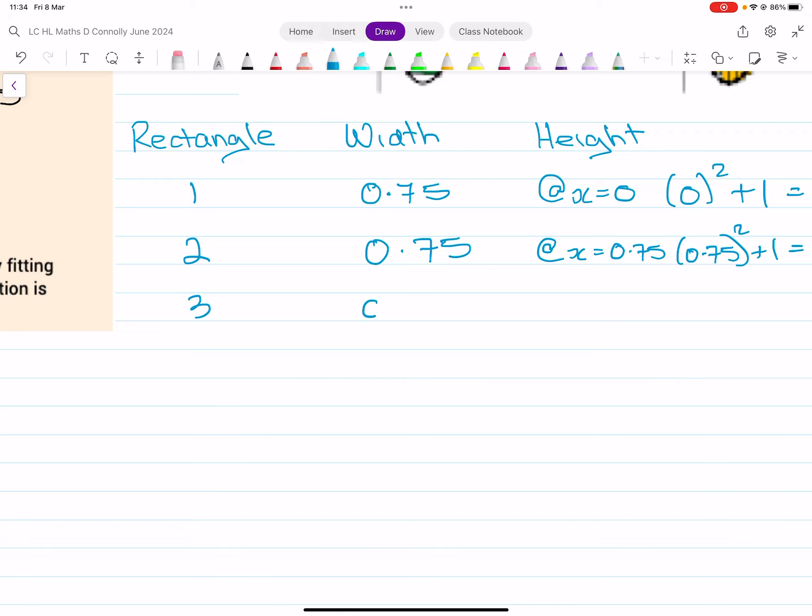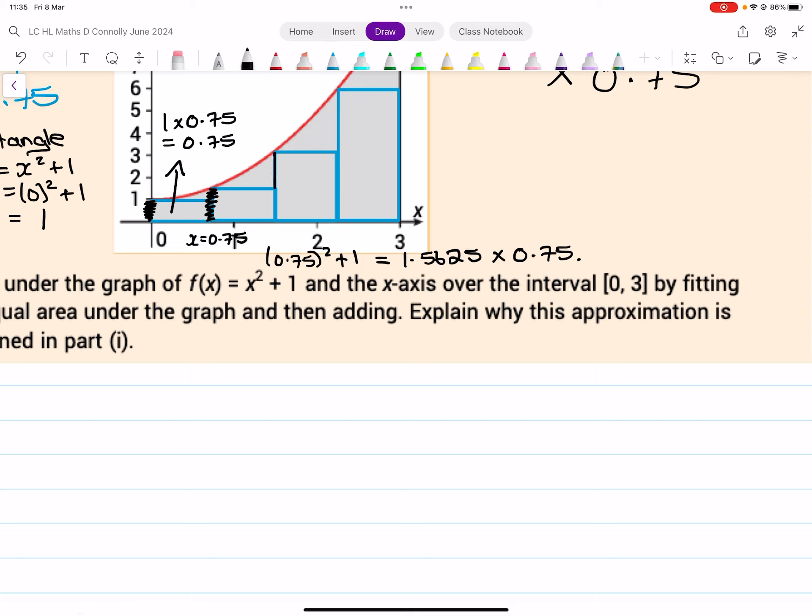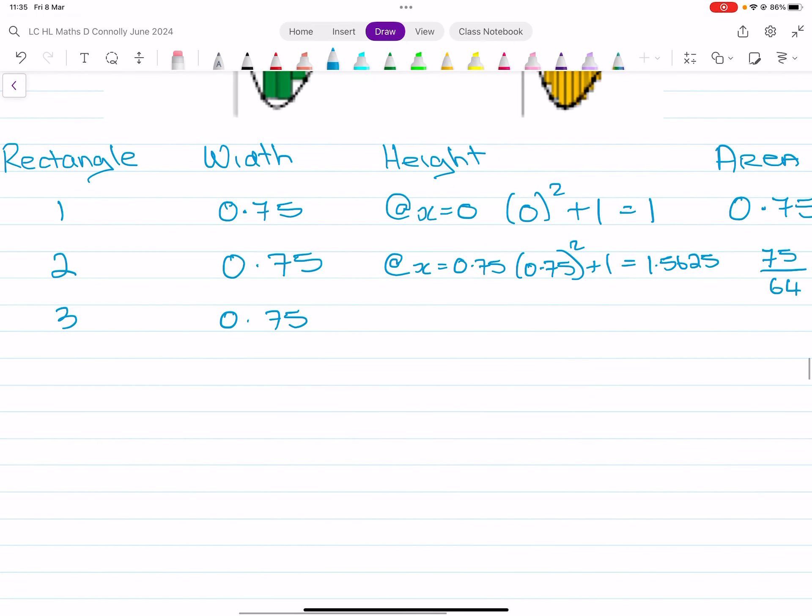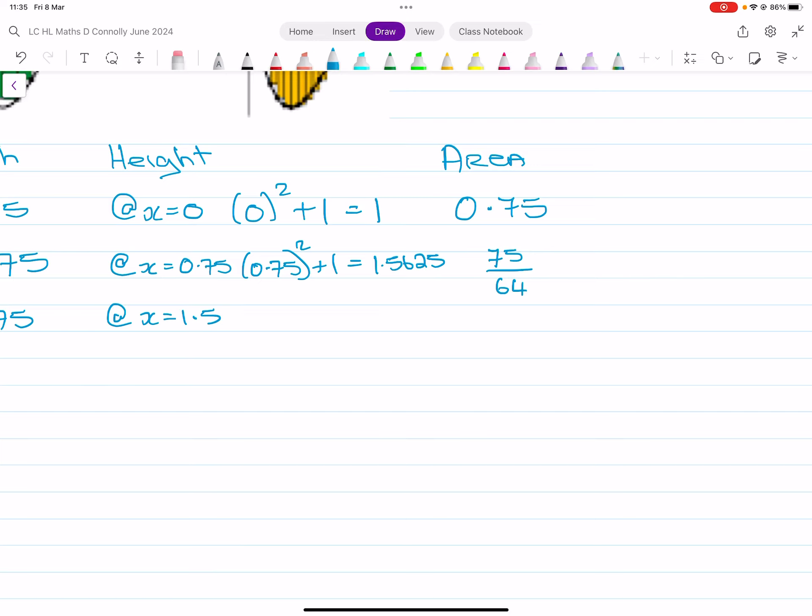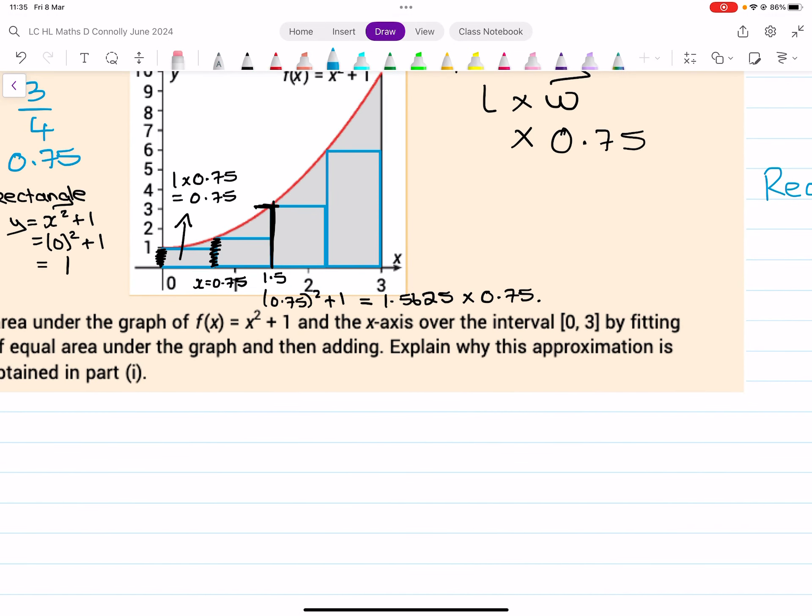The third rectangle has a width of 0.75, and then the height is the y value at x equal to 1.5. You get the area of the four rectangles and the idea is that you add them up, and you're getting an approximate area for the area under the curve, obviously with big huge gaping holes.